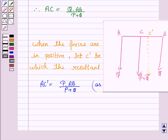Now we have to find the distance through which the resultant is displaced. So we have to find the distance CC dash which is given by AC dash minus AC.